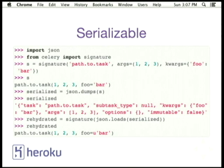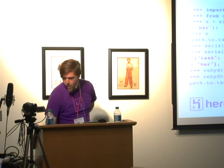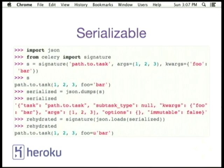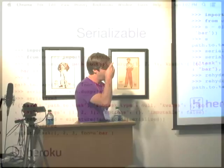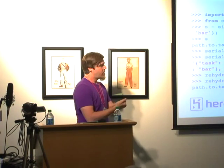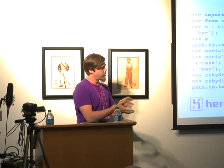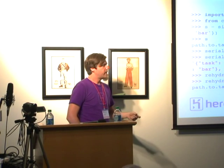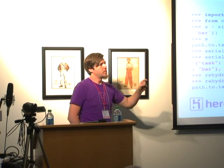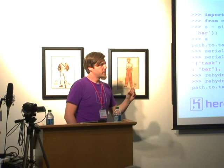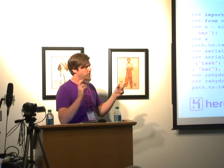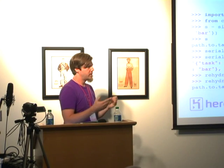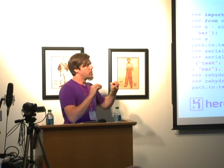When you send a task over the wire, it's always creating a signature and passing that signature through the message broker and back to the worker to be consumed. The subtask type is a key that tells Celery which type of registered signature to use in order to reconstruct this signature object. There's a mapping in Celery of the subtask type to the signature class — if it's null, it just creates a normal signature class, but if there's something like chain or group in there, signature knows about those registered types and uses the subtask type to determine which signature subclass to rehydrate.